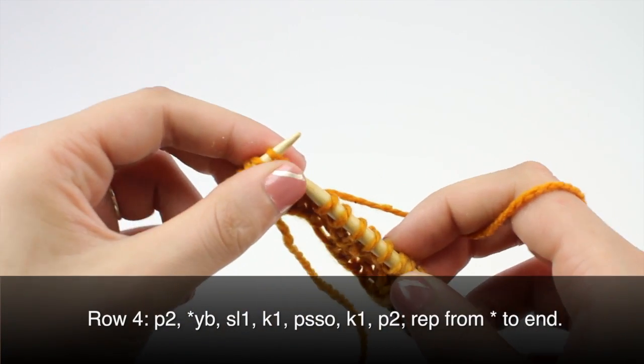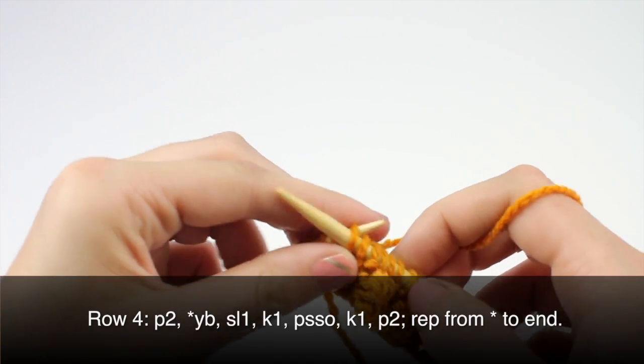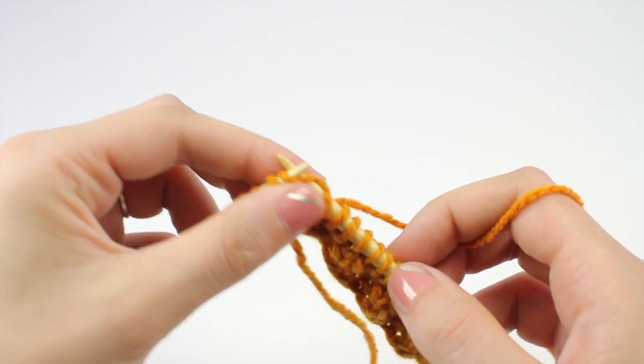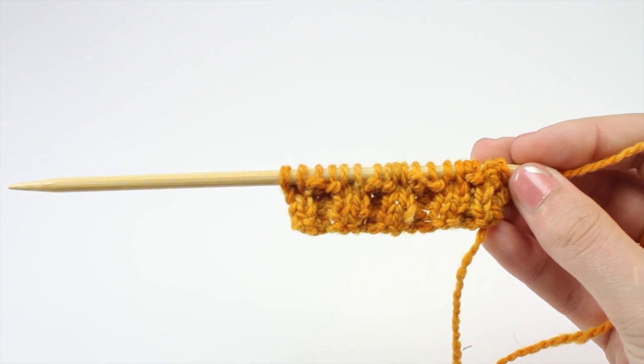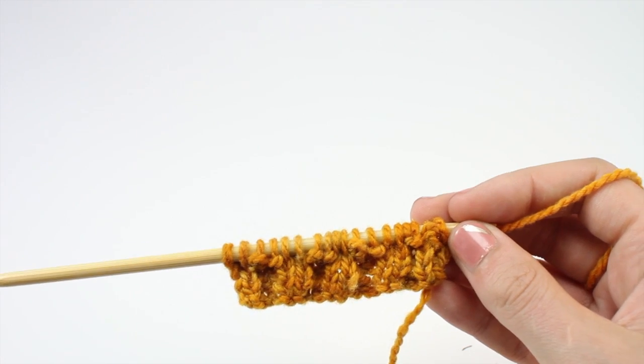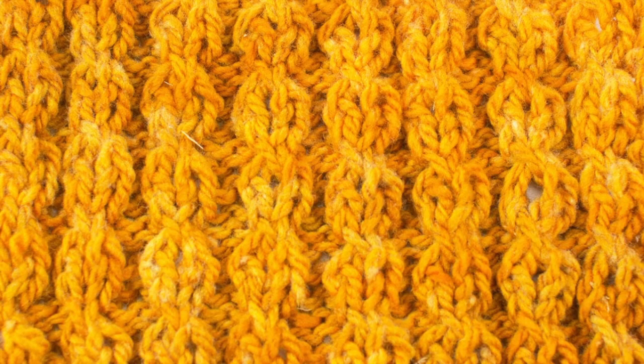Repeat rows one through four until you've reached your desired length. And that is how you knit a little hourglass ribbing stitch. After a few repeats, your pattern should look like this.